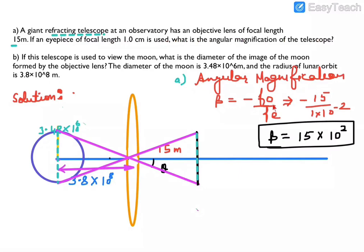It is very simple — it is FO/FE. FO is the focal length of the objective lens and FE is the focal length of the eye lens, that is 1 cm. Convert it to get the angular magnification — this is also called magnifying power.